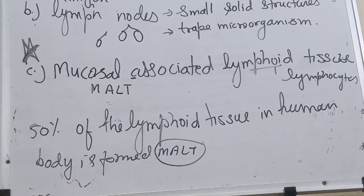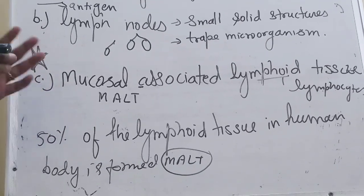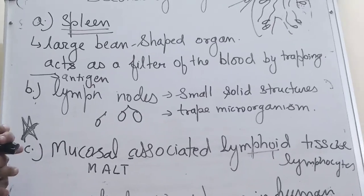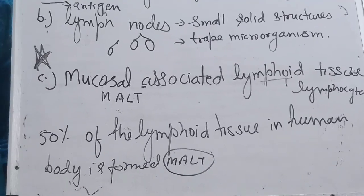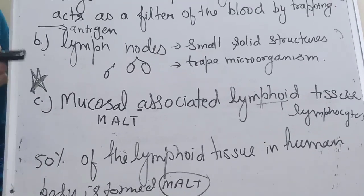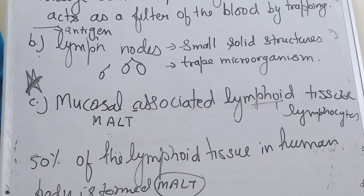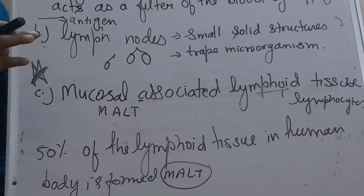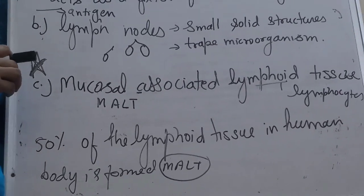Today we have discussed allergy and autoimmunity, as well as the lymphoid organs and their types according to their function — spleen, lymph nodes, and mucosal associated lymphoid tissue. Related to this, if the lymphatic system is infected by a virus, there is also a disease we can find. Lymphoid-related disease is AIDS. AIDS is caused by HIV — Human Immunodeficiency Virus — which gives AIDS, meaning Acquired Immunodeficiency Syndrome. The next video will discuss AIDS.